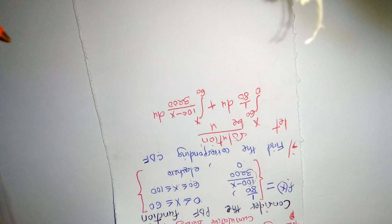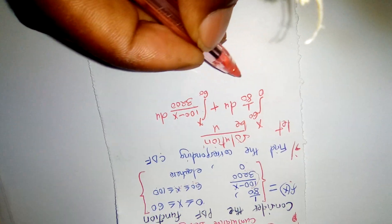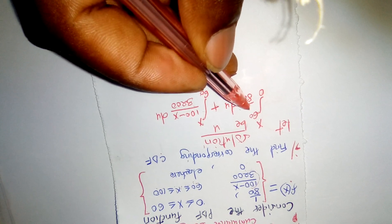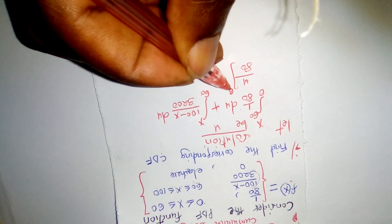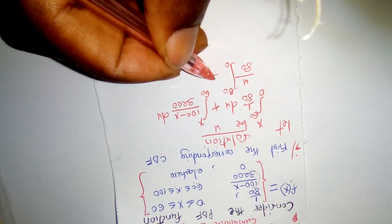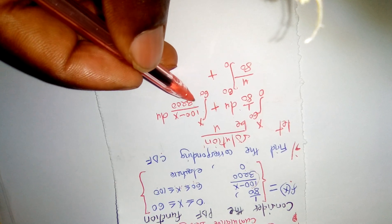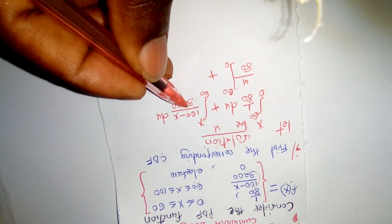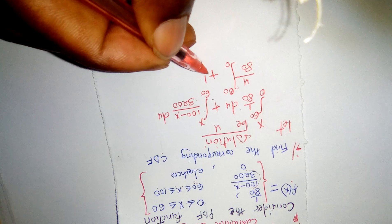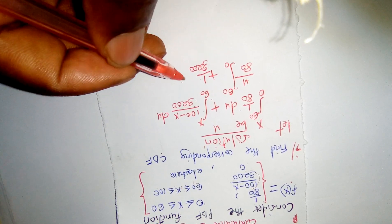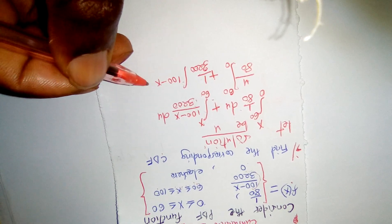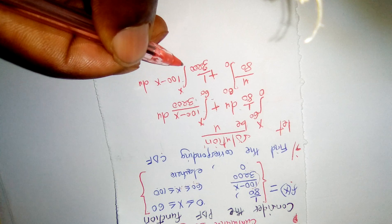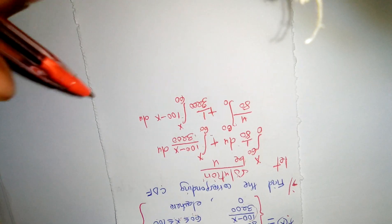Now we integrate. For 1/80 integrated in terms of u, it becomes u/80, evaluated from 0 to 60. For the second part, 3200 is a constant so we bring it out front as 1/3200, then integrate (100 − u) in terms of du, with limits from 60 to x.